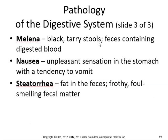Melena is black, tarry feces containing digestive blood. Nausea — unpleasant sensation in the stomach with a tendency to vomit. Steatorrhea is fat in the feces — frothy, foul-smelling fecal matter. There's usually some kind of issue with the pancreas or the gallbladder or bile.